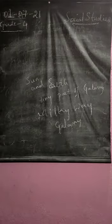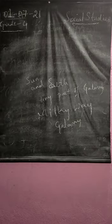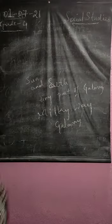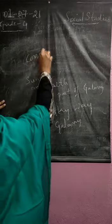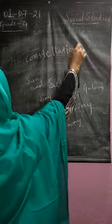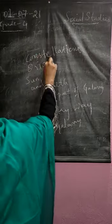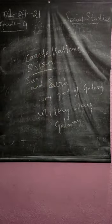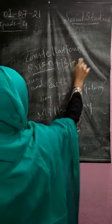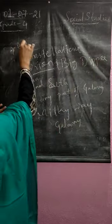So when you look at the sky during the night, a group of stars, you find like some shapes are formed. So those are called as constellations.